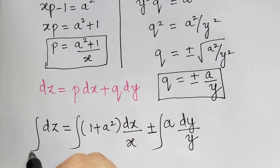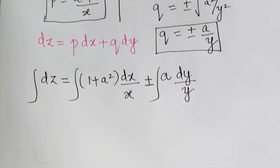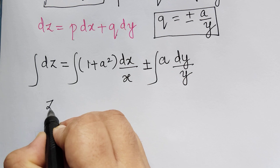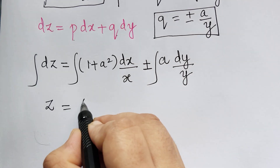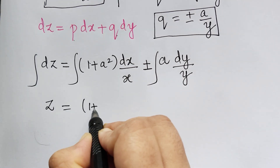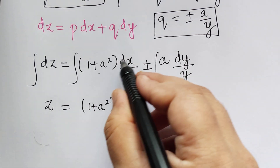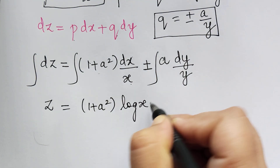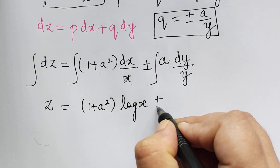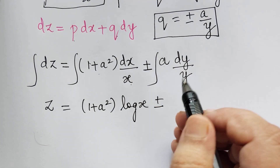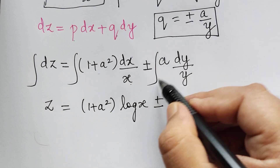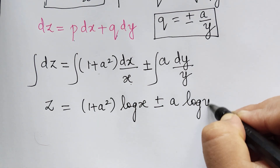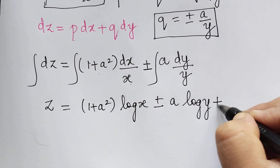Now we shall integrate on both sides. Integrating on both sides, integral dz is z, which is equal to 1 plus a squared — a constant — times log x, plus or minus a times log y, plus b.